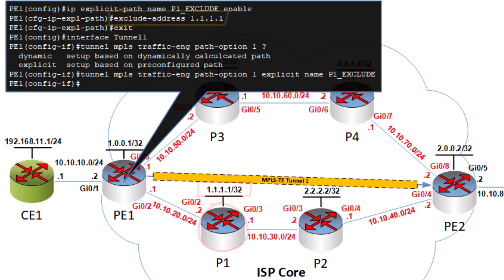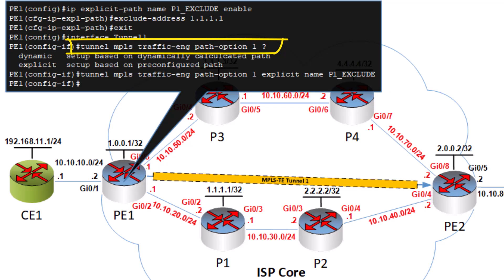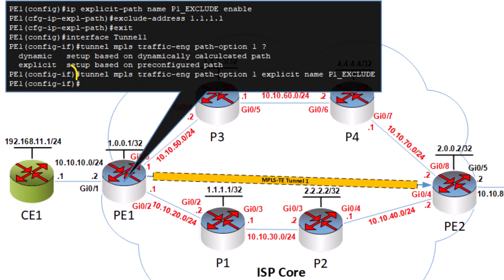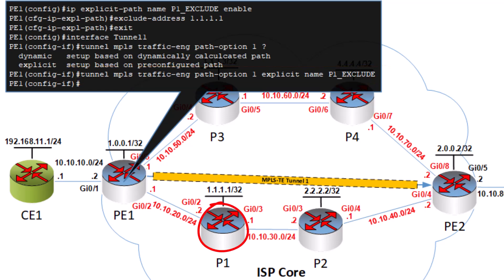Next, we have to apply this explicit path to the tunnel. We enter our tunnel configuration mode, and at this point we use our context-sensitive help to see the various path options that are given to us. We see the dynamic and explicit options. Before we had configured the dynamic option, but now we want to choose the explicit option. This configuration will overwrite the previous dynamic configuration we had applied. So we choose explicit and then we specify the name of our explicit path entity that we created, which is our P1_exclude. The result of this configuration is that the tunnel should avoid the P1 router, and since it only has one other choice of path, it should go via this path here.